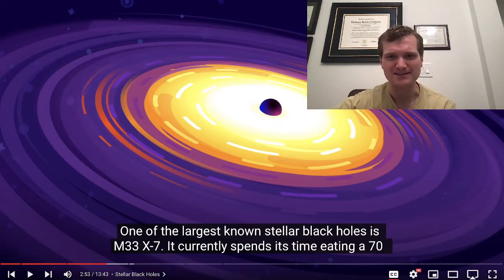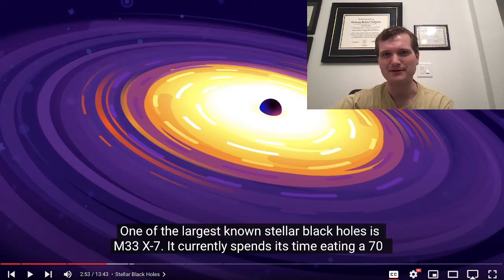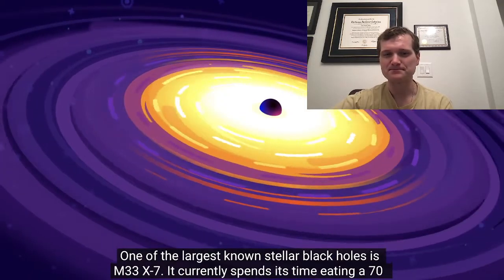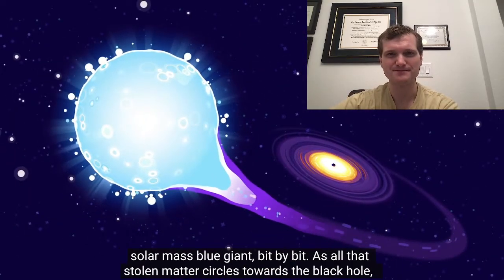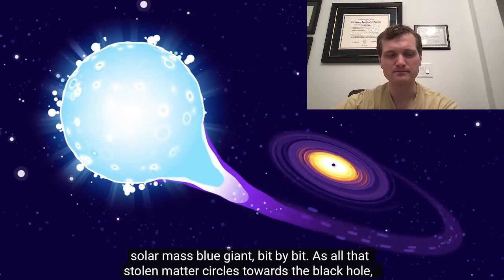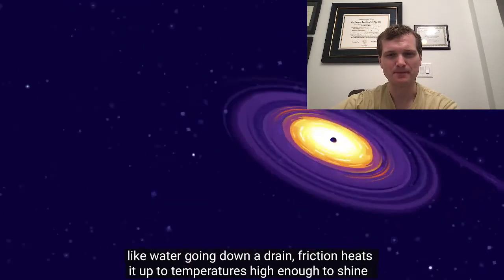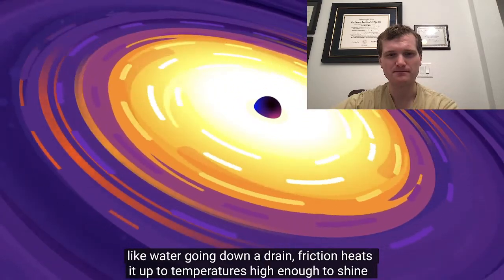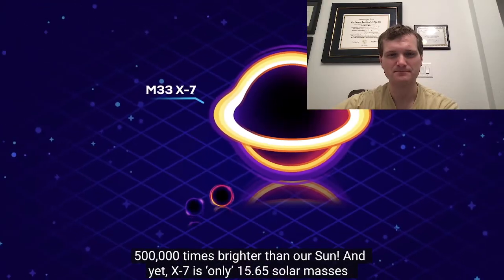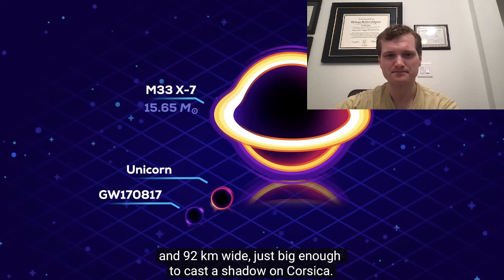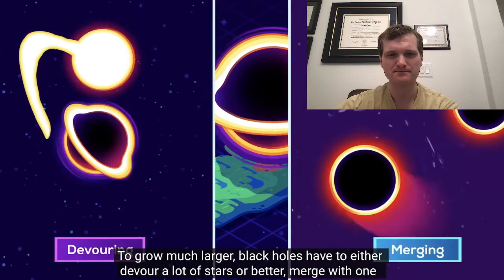Puts nuclear power to shame. Everyone talks about how energy dense that is and how densely packed it is relative to light coal, but this is a whole new level. It'd be cool if we could use black holes as a power source at some point. Black holes is M33 X7. It currently spends its time eating a 70 solar mass blue giant bit by bit. As all that stolen matter circles towards the black hole like water going down a drain, friction heats it up to temperatures high enough to shine 500,000 times brighter than our Sun. And yet, X7 is only 15.65 solar masses and 92 kilometers wide, just big enough to cast a shadow on Corsica.